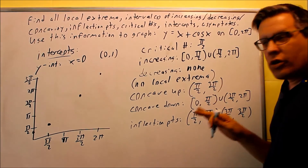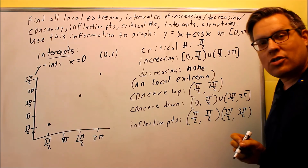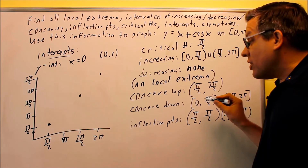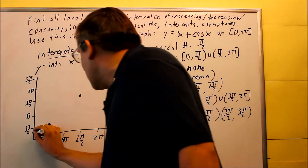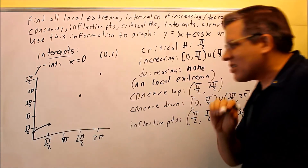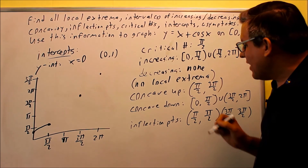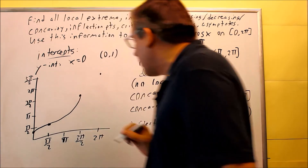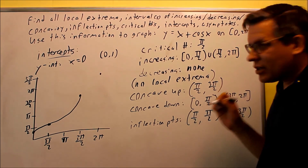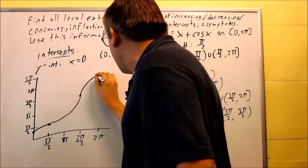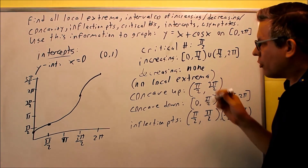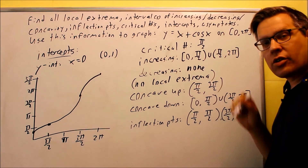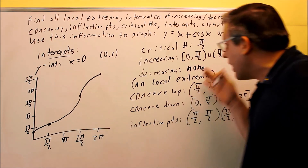Now let's use this information to draw the curve. Between 0 and pi over 2, it's concave down, so we draw it curving downward. Between pi over 2 and 3 pi over 2, it's concave up. Then from 3 pi over 2 to 2 pi, it goes back to concave down. The function is increasing throughout, but we must draw the curve correctly according to the concavity we calculated.